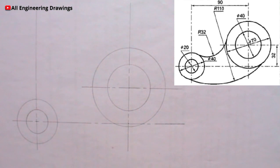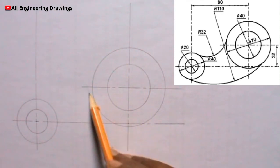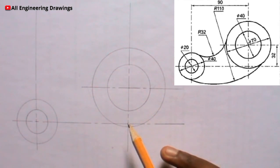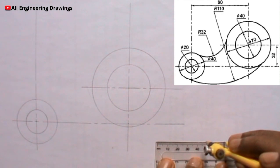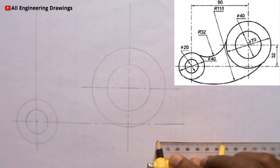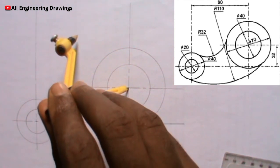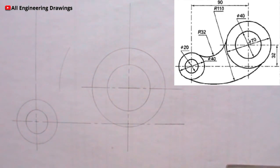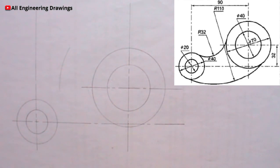Now we are done with the circles. It is time to produce the tangential arcs. The tangential arc here is an external arc, so we are adding the radius of this large circle and the radius of the tangential arc. The radius of this large circle is 35mm and the radius of the tangential arc is 32mm, so I will adjust my compass to a radius of 67mm.